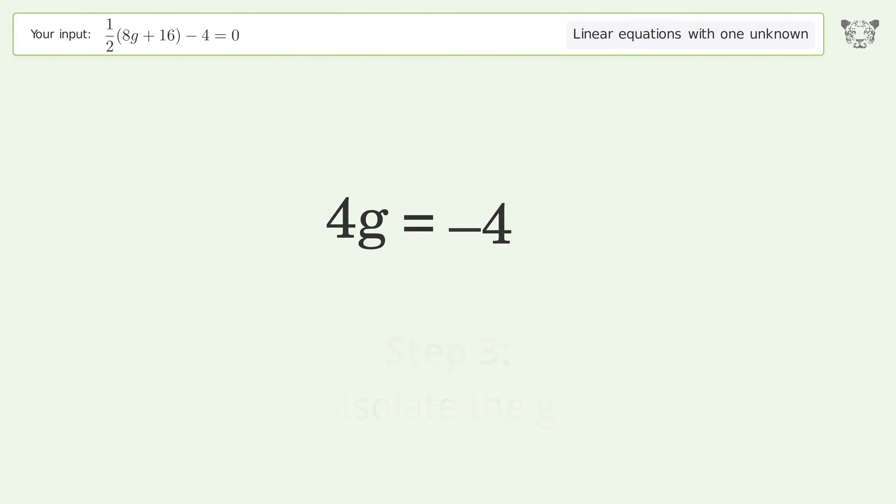Isolate the g. Divide both sides by 4. Simplify the fraction. And so the final result is g equals negative one.